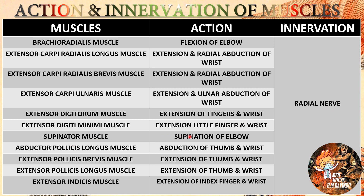Supinator action is supination of the elbow, innervated by the radial nerve. Abductor pollicis longus action is abduction of thumb and wrist, innervated by the radial nerve. Extensor pollicis brevis action is extension of thumb and wrist, innervated by the radial nerve. Extensor pollicis longus action is extension of thumb and wrist, innervated by the radial nerve. Finally, extensor indicis action is extension of index finger and wrist, innervated by the radial nerve.